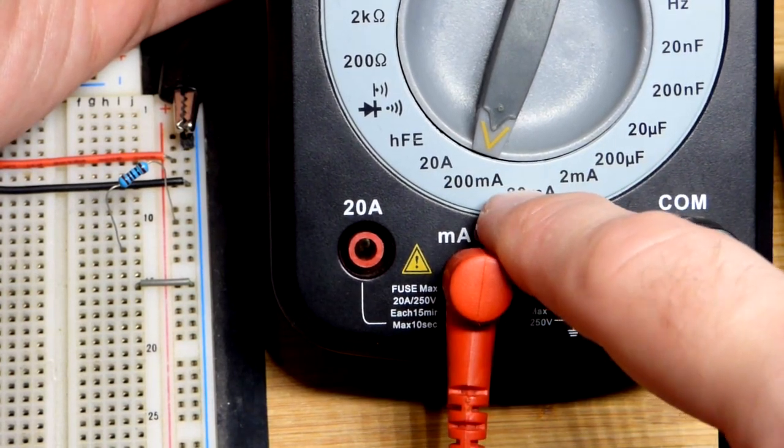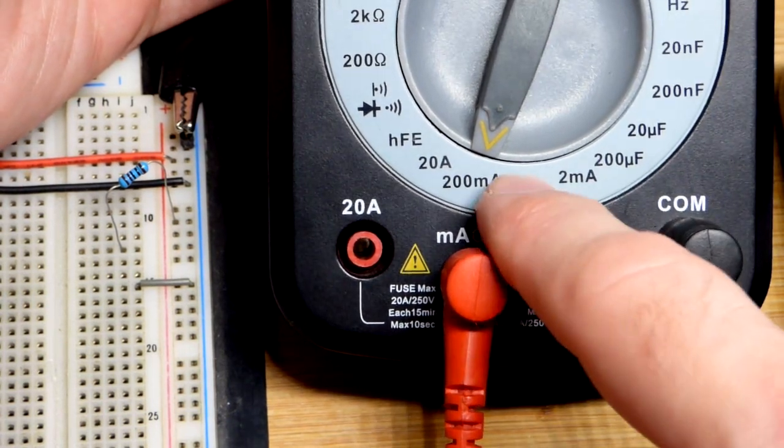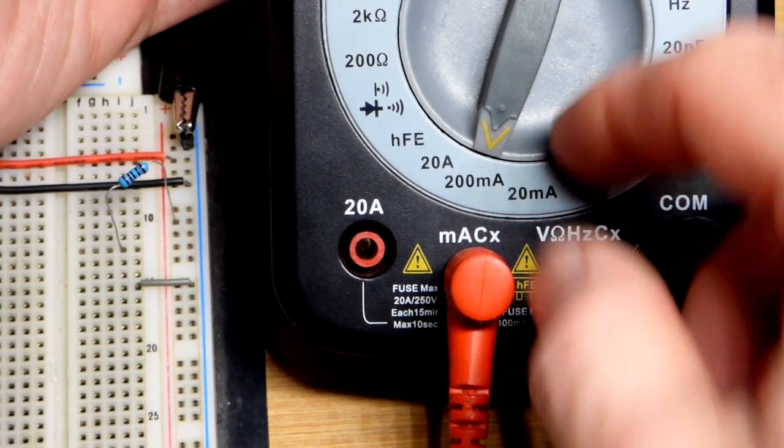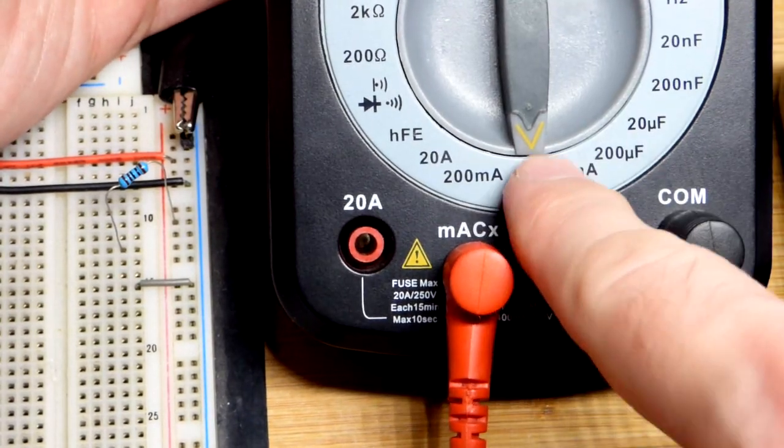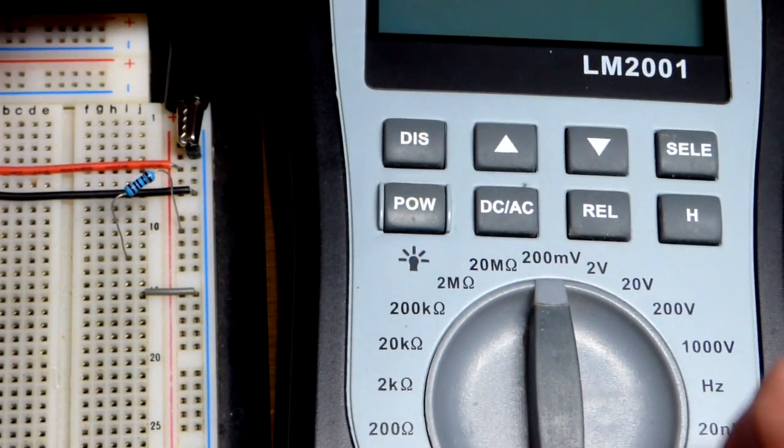We need to set the meter to a higher current than we're going to measure. There's fuses in here, and the fuses will blow if you measure more current than the meter is set to. We're going to set it to 20 milliamps, more than we need, but it'll save time instead of working our way down.